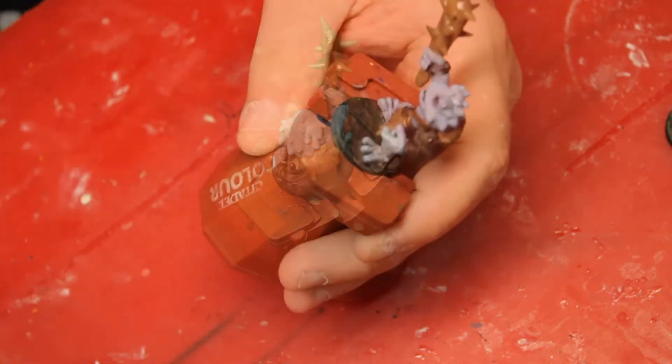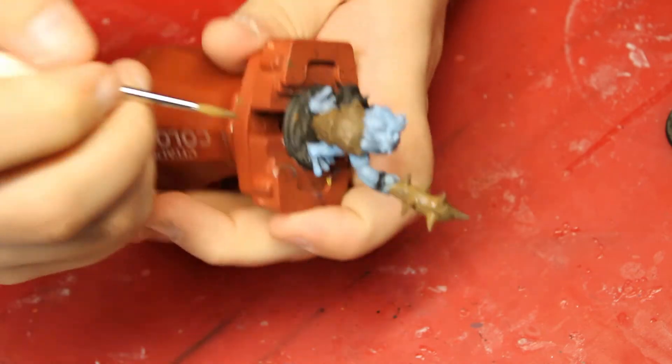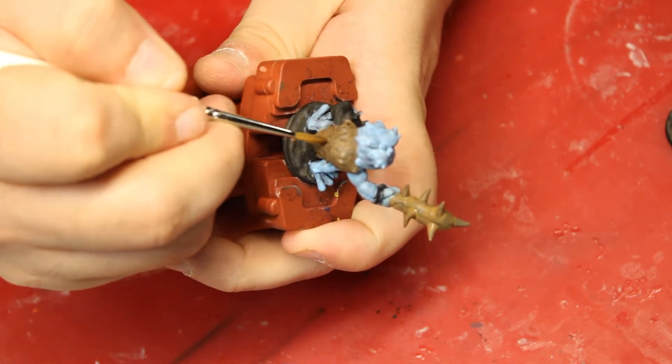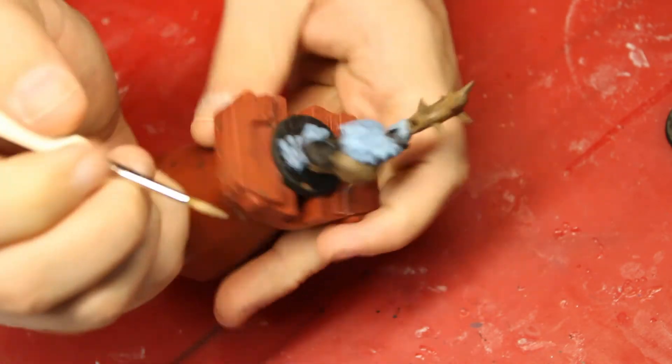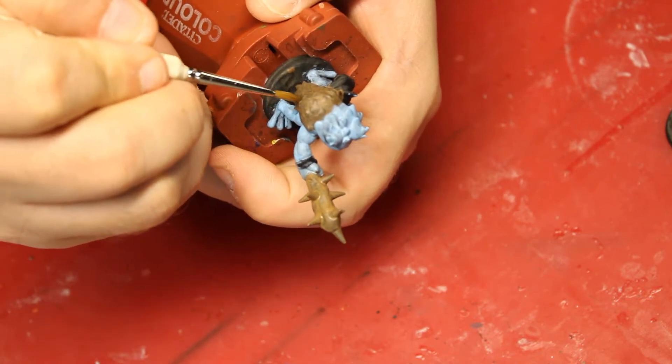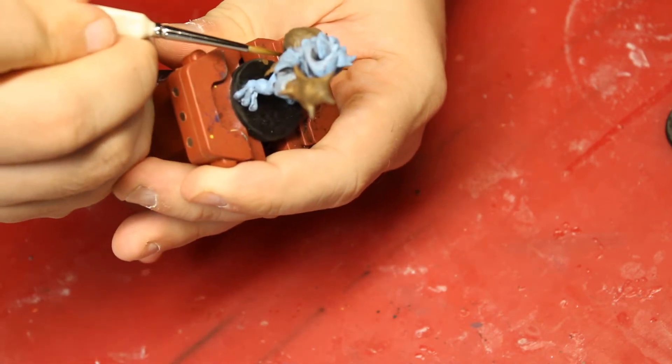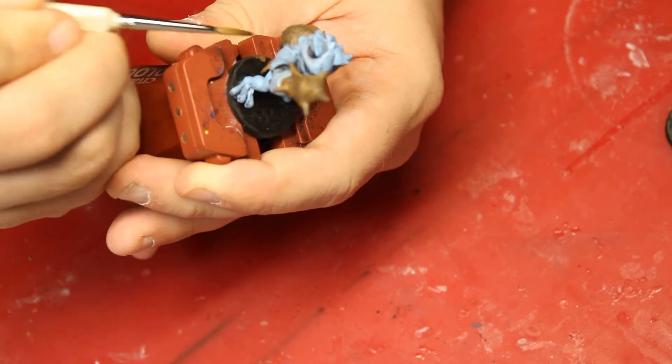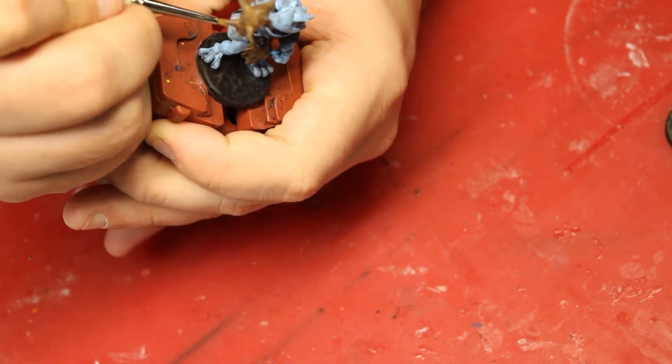straps that go up to his cloak. And it's nice and connected, and it gives a base coat to that, which distinguishes it different from the blue that I use for his chest and his skin.